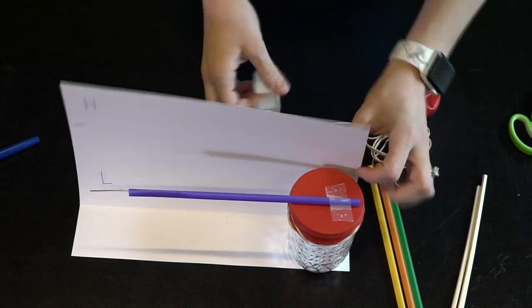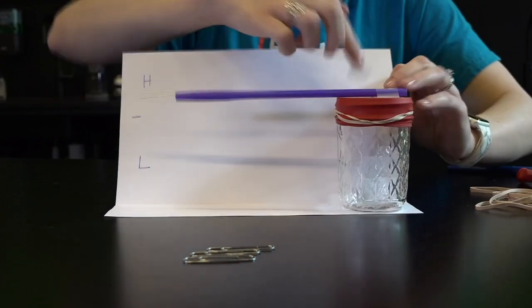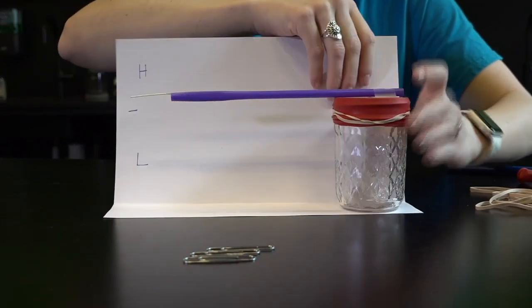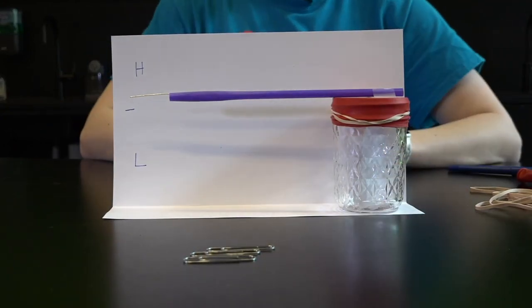When air pressure outside of the jar is lower the balloon is pushed out and the needle will point down indicating low pressure. When air pressure outside of the jar is higher the balloon is going to be pushed inwards and the needle is going to be pushed up indicating high pressure.